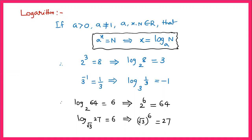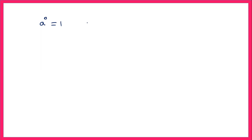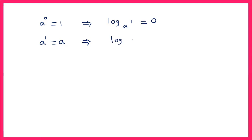Now let us discuss some more laws. We know in exponents that a power 0 equals 1. So changing into logarithmic form, we can write log 1 to the base a equals 0. Also, we know that a power 1 equals a. Changing this into logarithmic form, log a to the base a will be equal to 1.